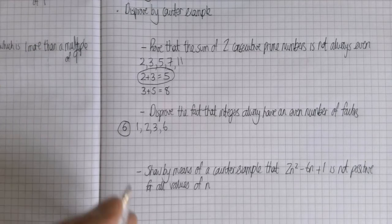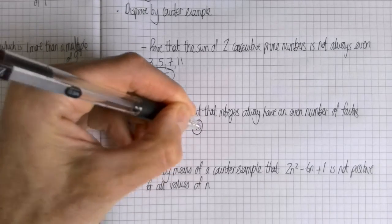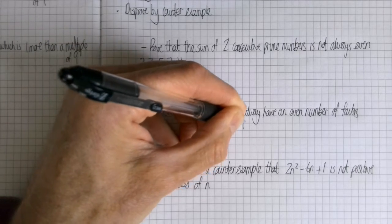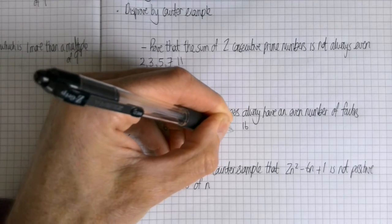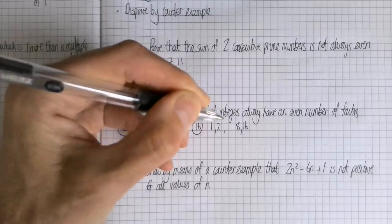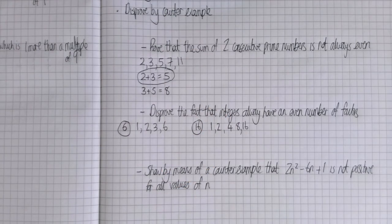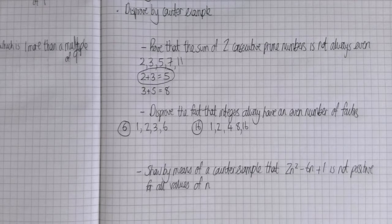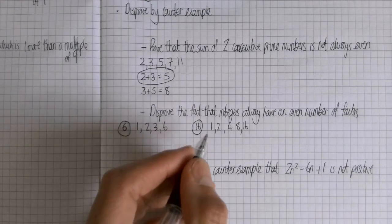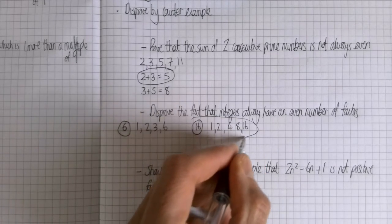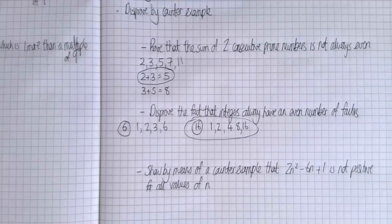It's any square number. So 16 for example. So you can do 1 times 16, 2 times 8, and 4 times 4. So 16 and any other square number has an odd number of factors. So that is your counter example that disproves.